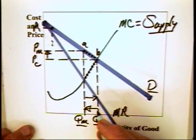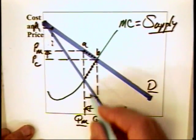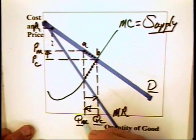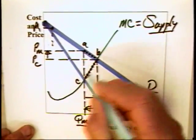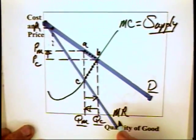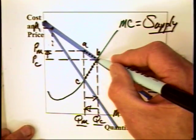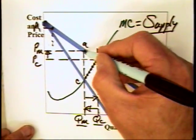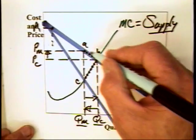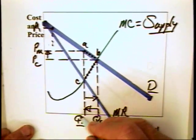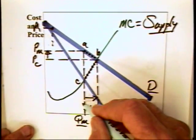You add up those marginal quantities and you get a total cost of producing QM to QC equal to QM, C, B, QC. So we have total value of all of these units equal to this area here, QM, A, B, QC.